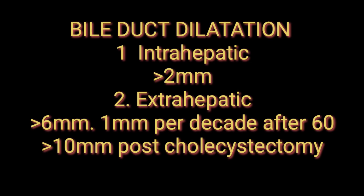Bile duct dilatation can be intrahepatic or extrahepatic. For intrahepatic, more than 2 mm is considered dilated; less than 2 mm is normal. For extrahepatic biliary channels, more than 6 mm is considered enlarged or dilated. The rule is 1 mm per decade after 60 years — so at age 70, normal is up to 7 mm, and at age 80, normal is up to 8 mm.